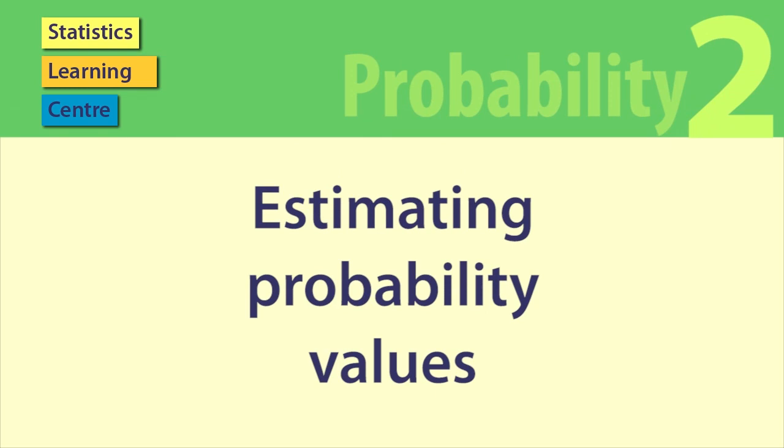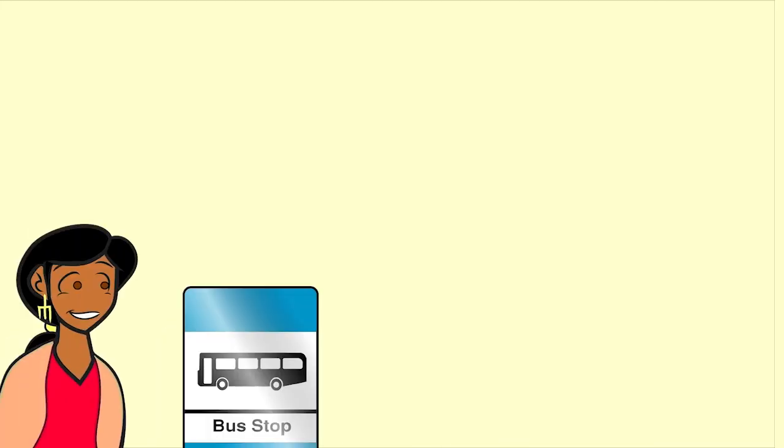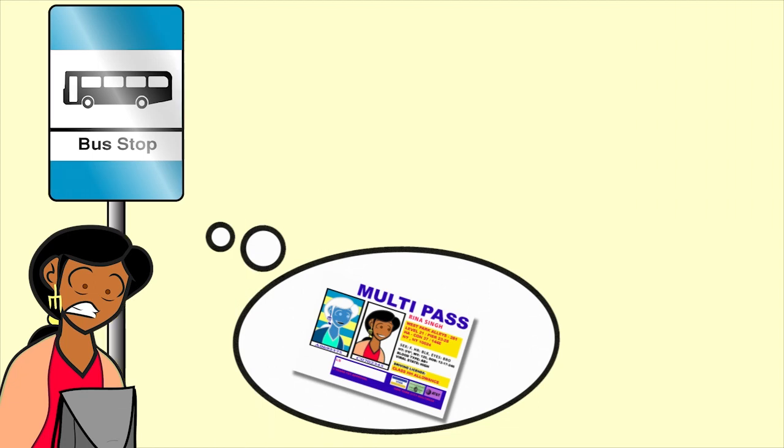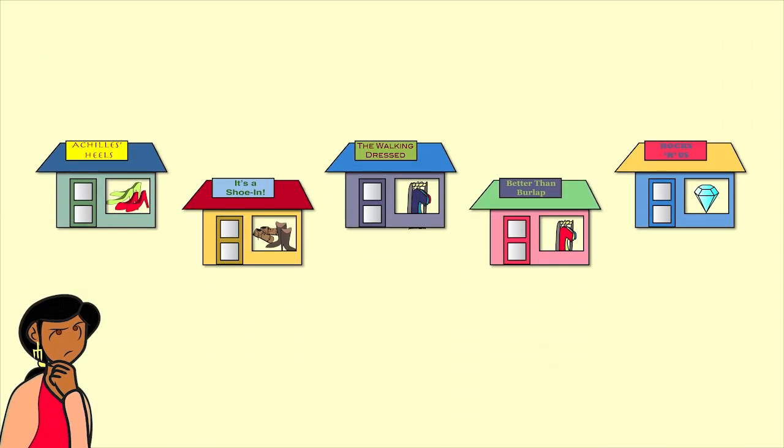Then we show how probability values can be estimated with the example of Rina losing her bus pass and estimating the probability that it was left in a shoe store.